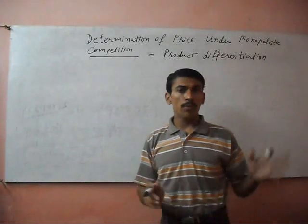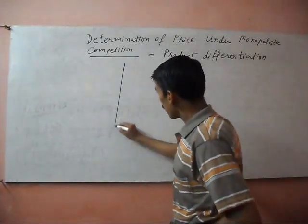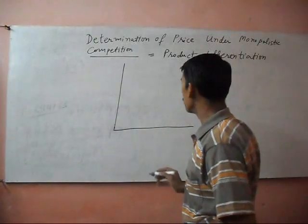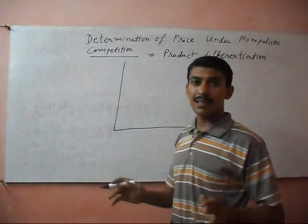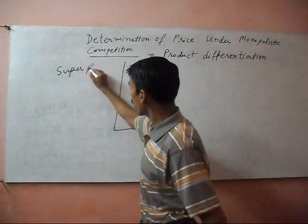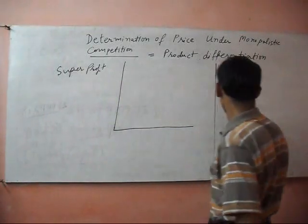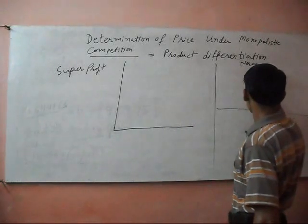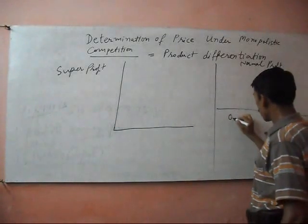In the monopolistic competition, we make it in graphic presentation. The firm can earn super profit or normal profit or minimum loss.